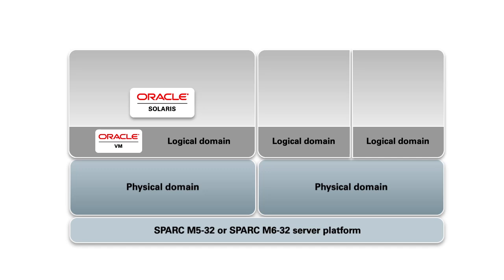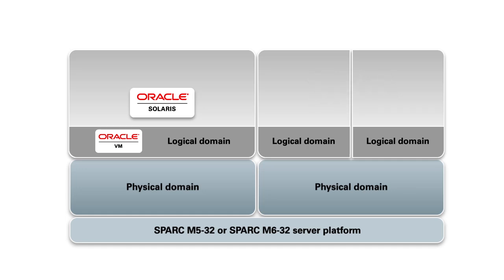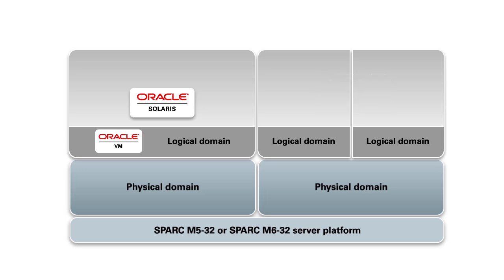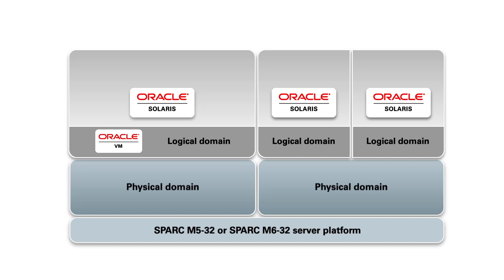When assigning logical domains along processor core boundaries, you can create up to 384 logical domains in a SPARC M632 server and 192 logical domains in a SPARC M532 server. Use Oracle VM Server for SPARC logical domains to isolate an operating system from other operating systems running within a physical domain.